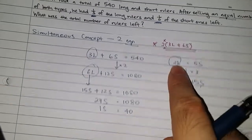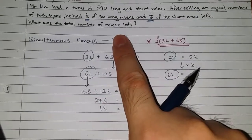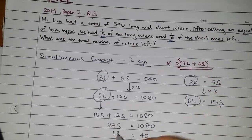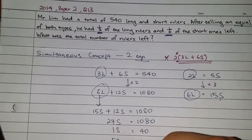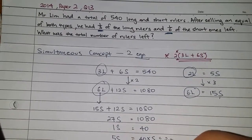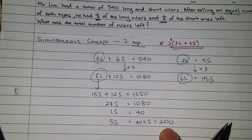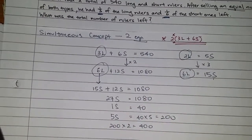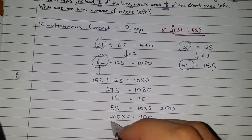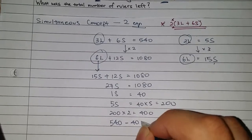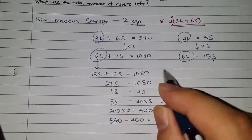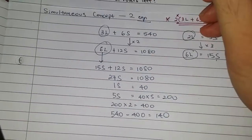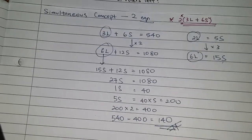So, I need to find L because I need to find the number of rulers left. Or I can find how much short was sold. 5 short was sold. So, 5S is equals to 40 times 5 is 200. Because they are equal numbers of short and long sold. So, 200, this is the amount sold. So, for long and short total. Lastly, 540 minus 400 gives me 140. Of course, you can find 1L and find 1S and then you find 1L plus 1S. You would also still get the same answer, 140.